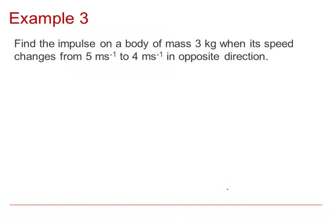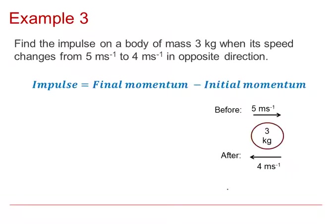Find the impulse on a body of mass 3 kilograms when its speed changes from 5 metres per second to 4 metres per second in the opposite direction. It's important to draw a diagram: the mass is 3 kilograms, initially moving to the right at 5 metres per second, and afterwards moving in the opposite direction at 4 metres per second. Since it ends up going to the left, the impulse must be to the left — I'll call that impulse I acting to the left.